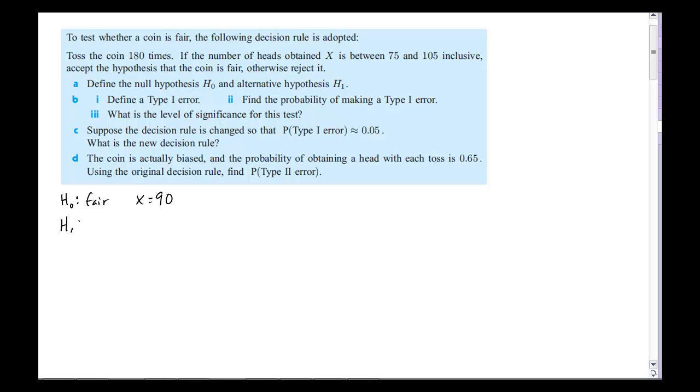Right? Fair enough. Alright, our alternative hypothesis is that it's not fair, which means that X is not 90, which means that it could be greater than or less than, which means I am going to be using a two-tail test, okay, looking at both ends, which is demonstrated here in the problem where it says that I'm looking at the number of heads between 75 and 105.